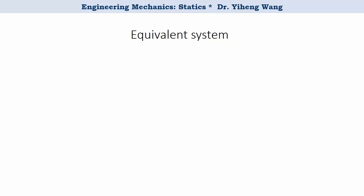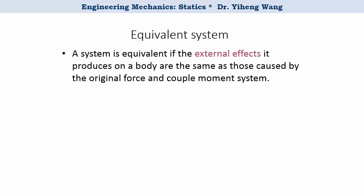A system is equivalent if the external effects it produces on a body are the same as those caused by the original force and couple moment system. In the class of statics, since members are not moving, we say the systems are equivalent if they induce the same support reactions at the supports.